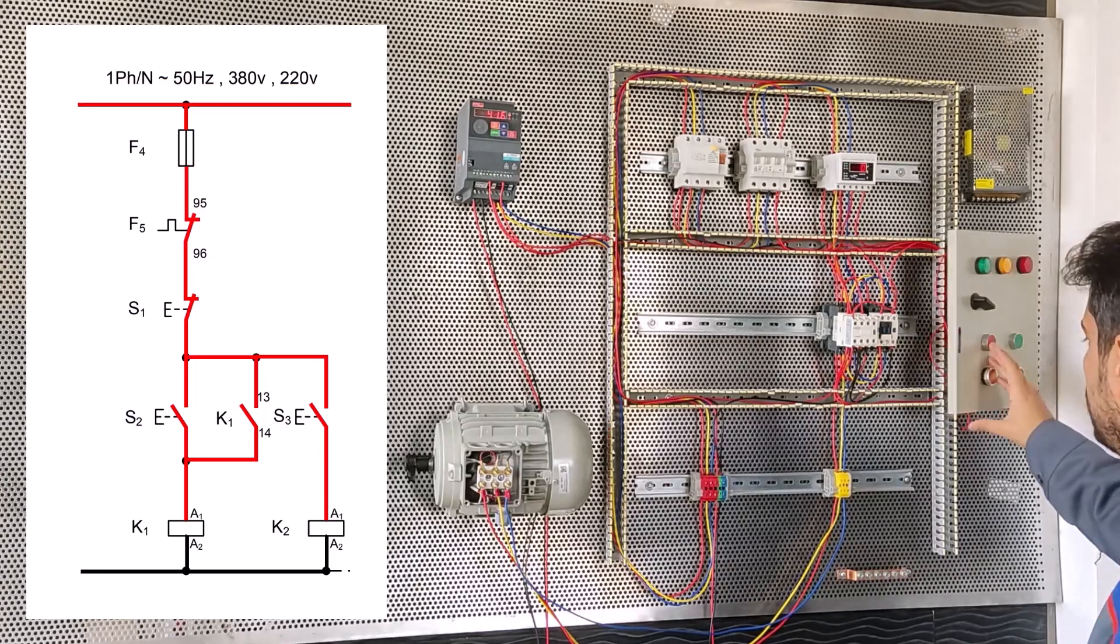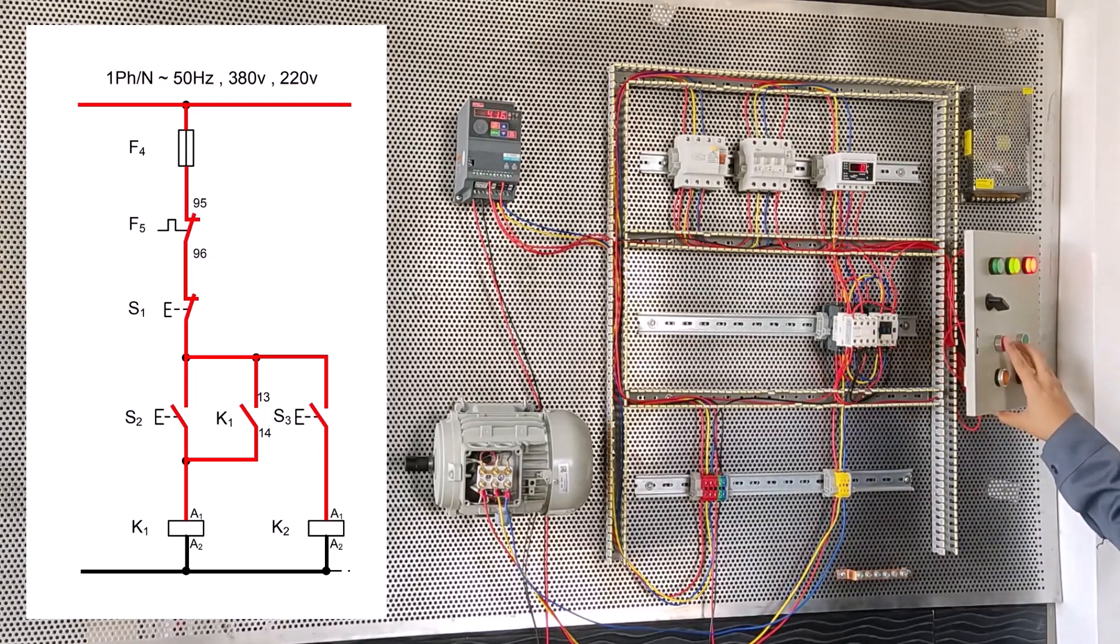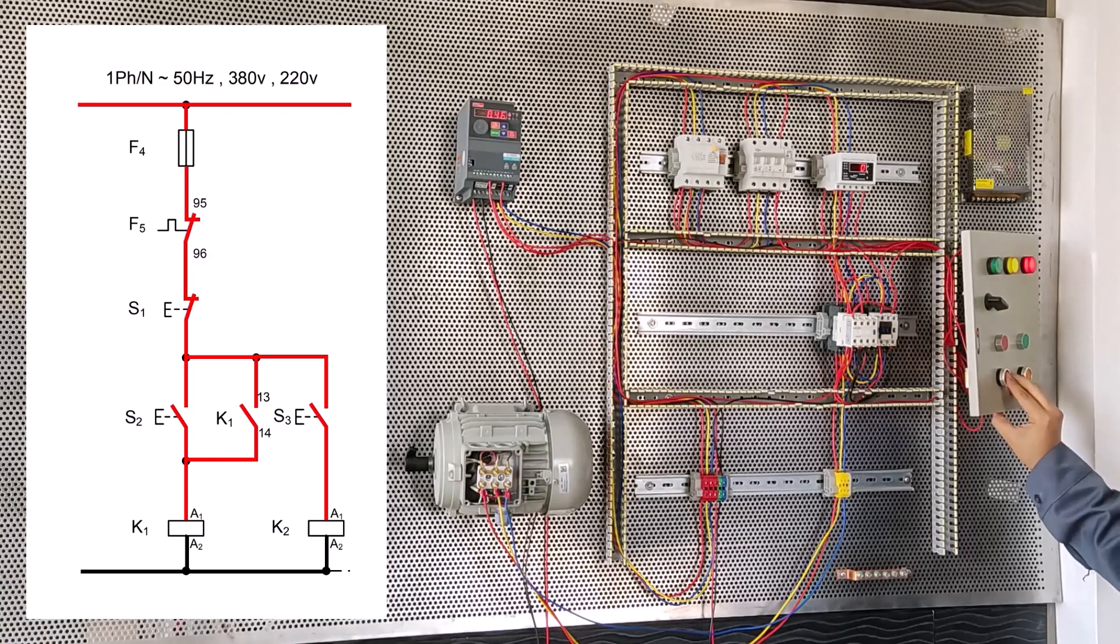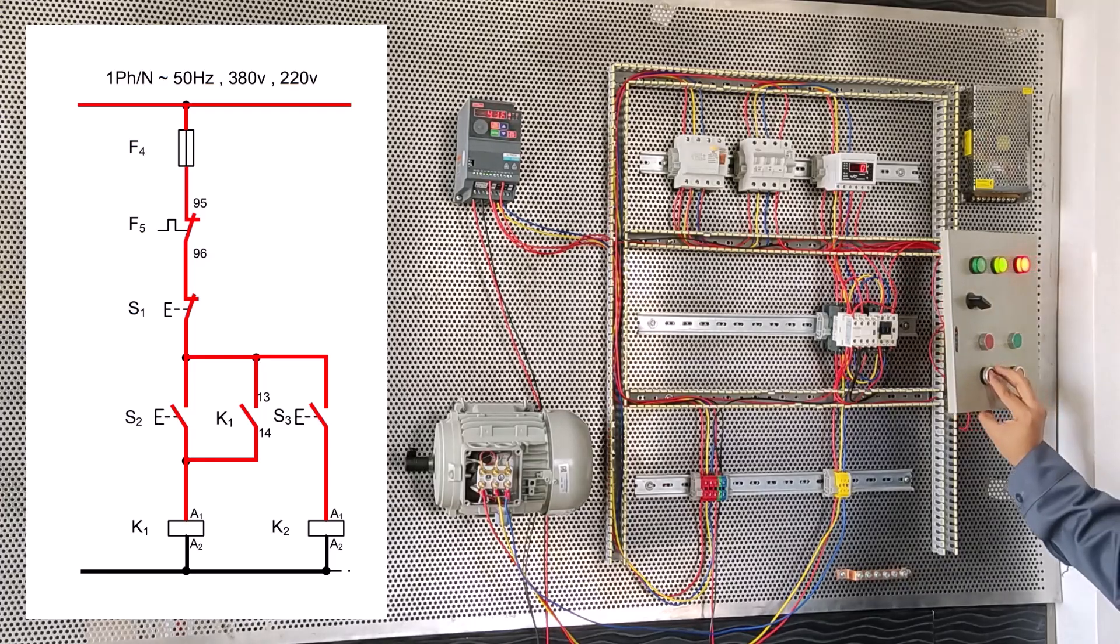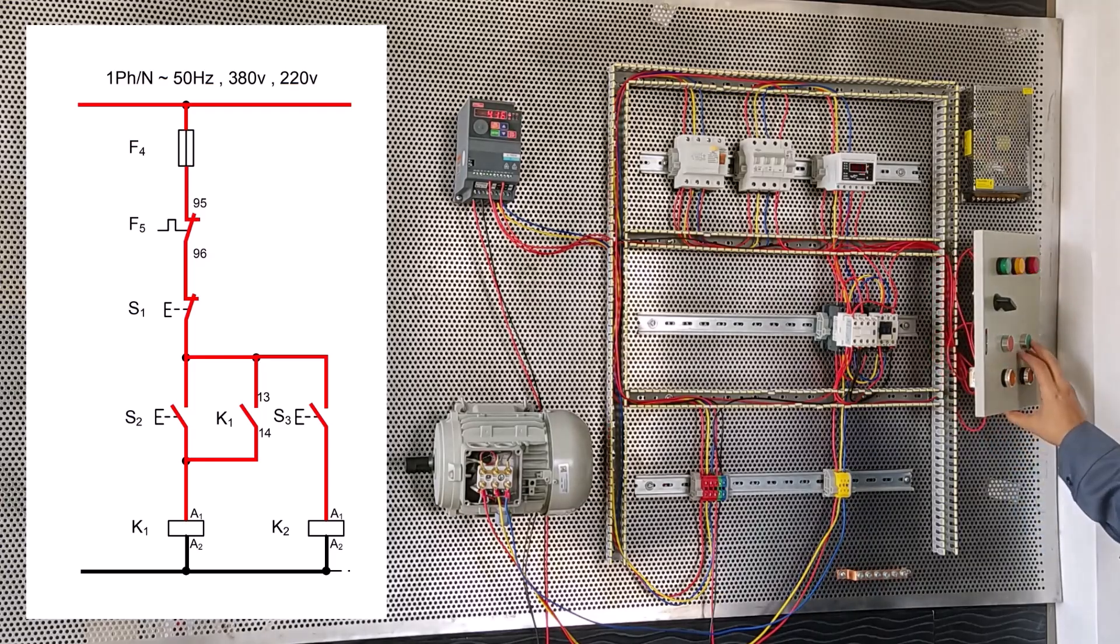Now I will test the circuit. Using S2, we activate the motor permanently. Using S3, we activate the motor momentarily. I hope you enjoy this video and thank you for watching.